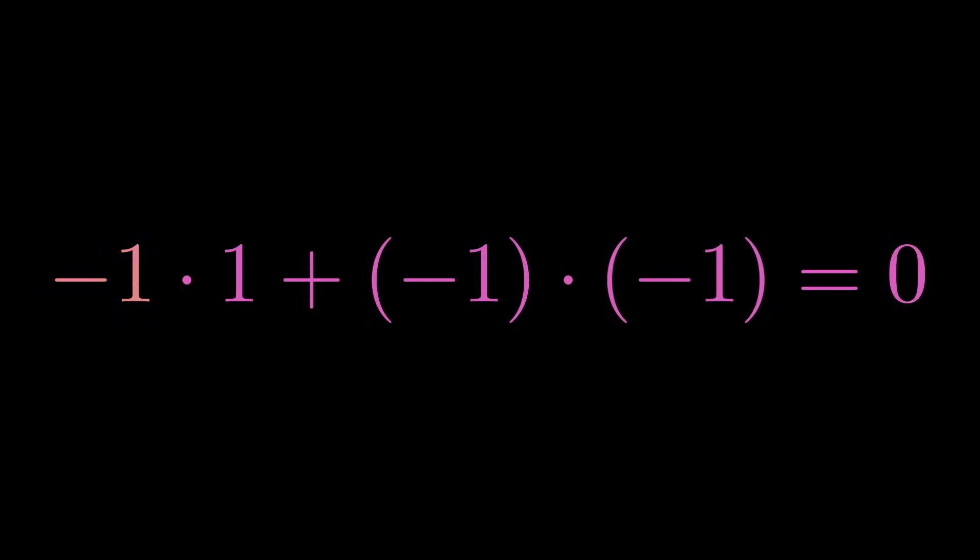Writing it out, we get minus 1 times 1 plus minus 1 times minus 1. We know that minus 1 times 1 is equal to minus 1, so we reduce.